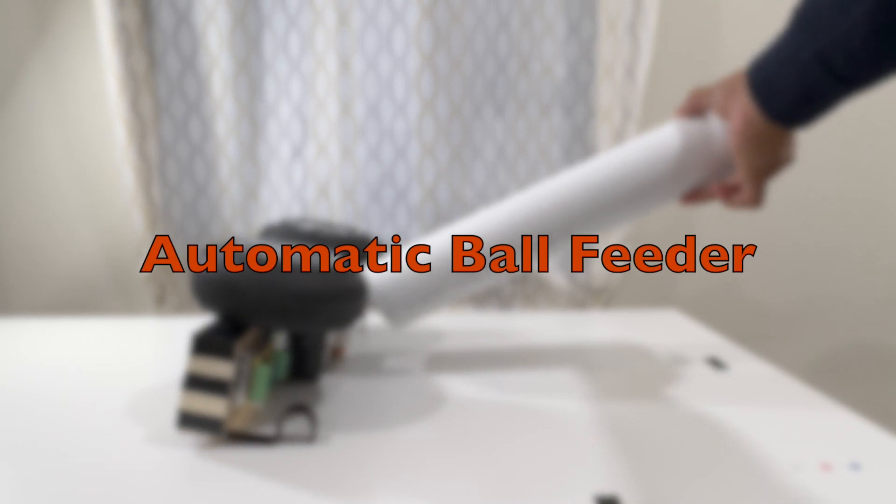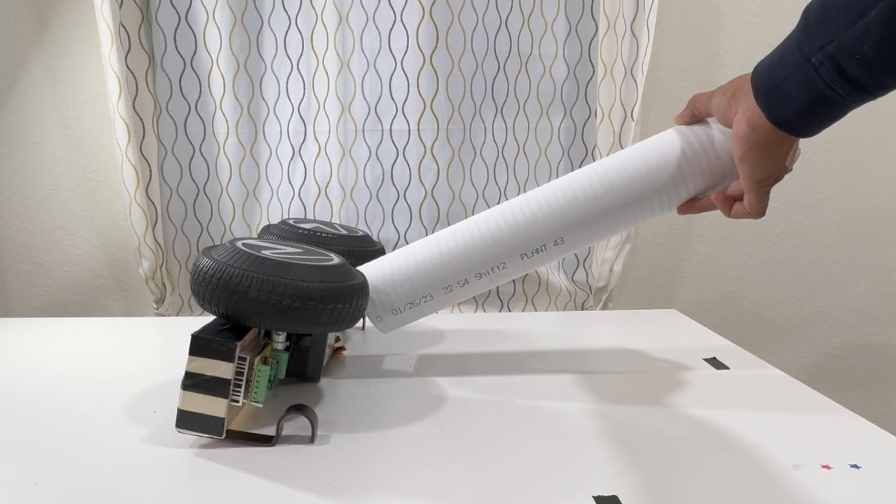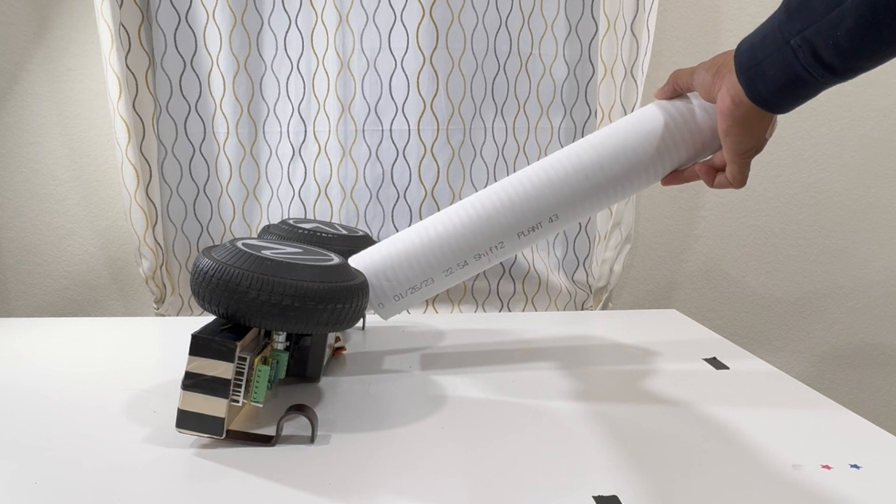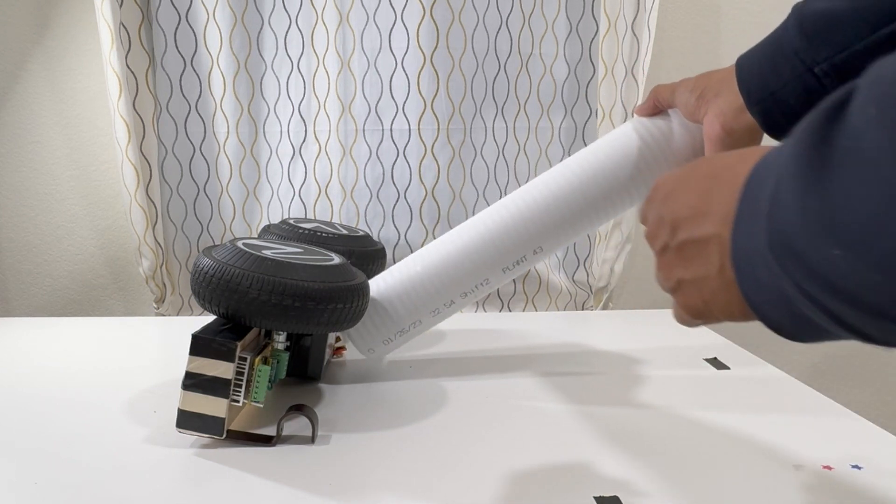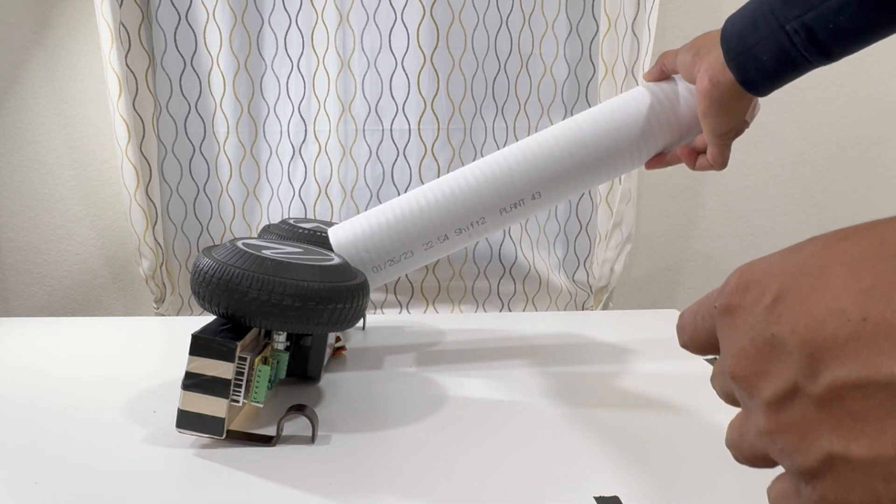We are going to build an automatic ball feeding system which will dispense one ball at a time and should be able to hold five to six balls in the dispenser. To build that system, we will be using a PVC tube.